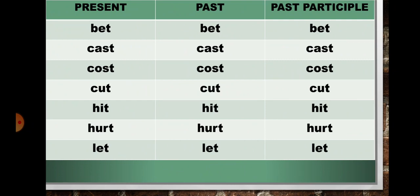In present if it is 'bet', so in past it will be 'bet', and in past participle form also it will be 'bet'. In present if it is 'cast', so in past also it will be 'cast', and in past participle form also it will be 'cast'.